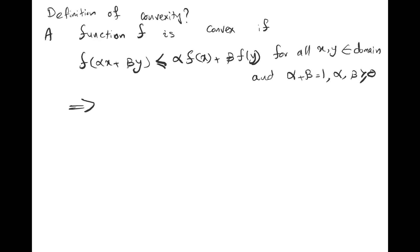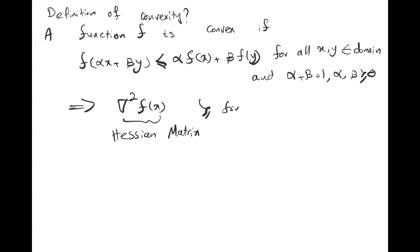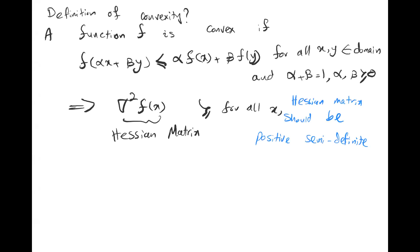This is equivalent to having the Hessian matrix be positive semi-definite for all x. We are going to talk about positive semi-definiteness in the introduction to linear algebra, which will be covered in the next few videos.